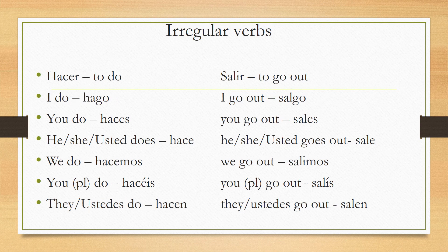For 'hacer' (to do): 'I do' is 'hago'; 'you do' is 'haces'; 'he/she does' is 'hace'; 'we do' is 'hacemos'; 'you do' plural is 'hacéis'; and 'they do' is 'hacen.' For 'salir' (to go out): 'I go out' is 'salgo'; 'you go out' is 'sales'; 'he/she goes out' is 'sale'; 'we go out' is 'salimos'; 'you go out' plural is 'salís'; and 'they go out' is 'salen.'